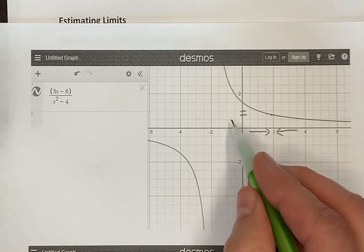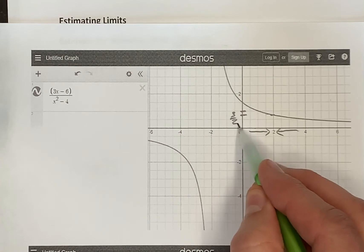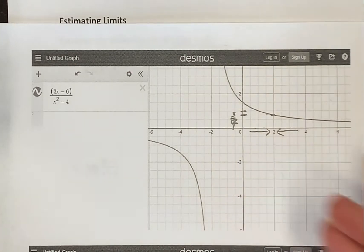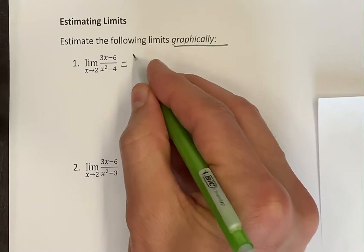And you could zoom in here, but that's 3 quarters. Oh, that limit is 3 quarters, how about that? That's actually what we got numerically.